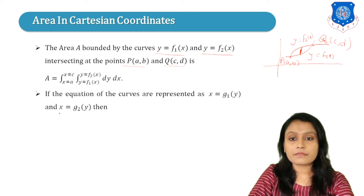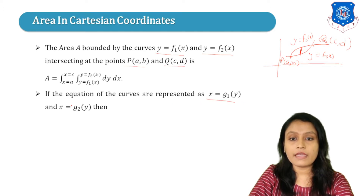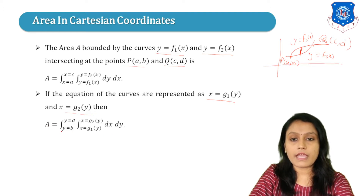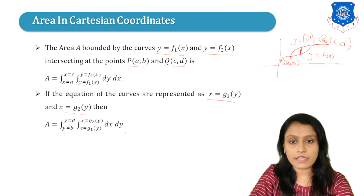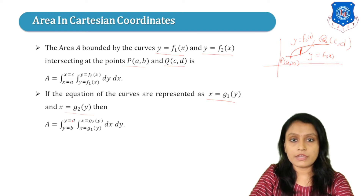If the equations of the curves are represented as X equals G1(Y) and X equals G2(Y), then the area is given by a double integration where the limits of Y are B to D and the limits of X are G1(Y) to G2(Y), with dx dy. This is the formula used to find area in Cartesian coordinates.